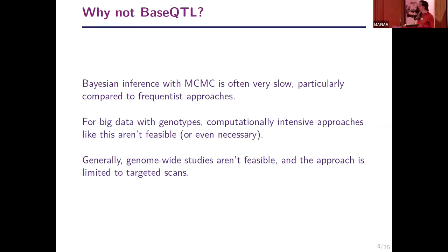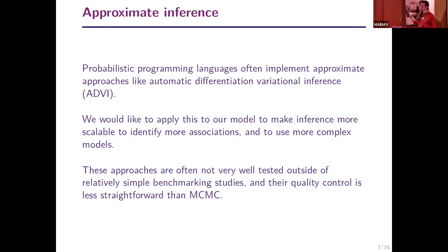Stan recently added approximate inference — specifically automatic differentiation variational inference (ADVI), a type of black-box variational inference. We would like to apply this to make inference more scalable and identify more associations with more complex models. However, this approach isn't well-characterized outside of simple benchmarking studies, and quality control of variational inference is less straightforward than MCMC. We applied this to 86 geuvadis lymphoblastic cell line samples with genotypes and RNA-seq data, looking at about 50,000 associations.